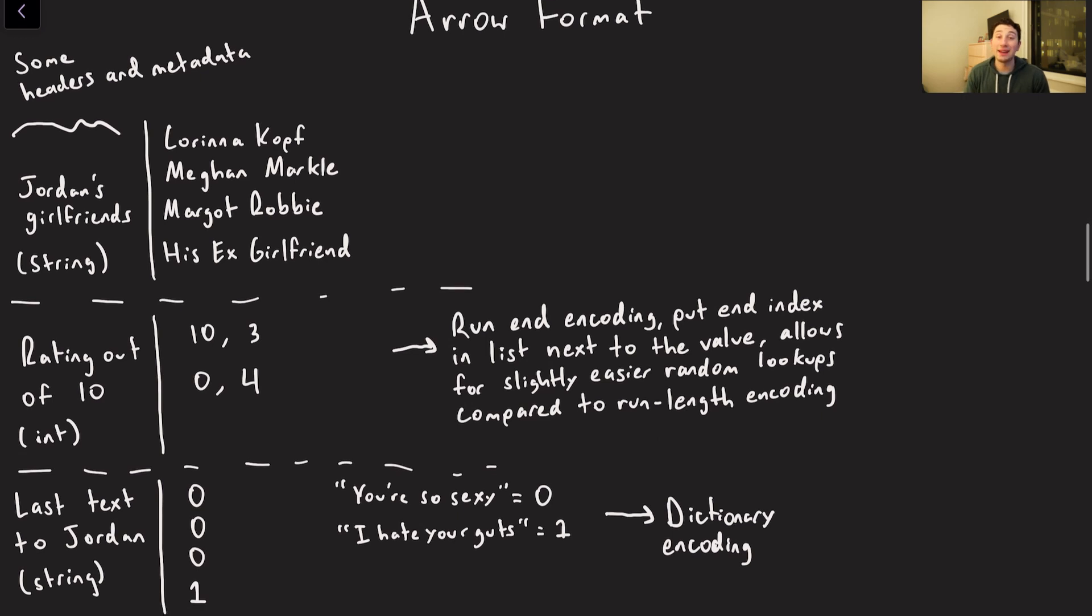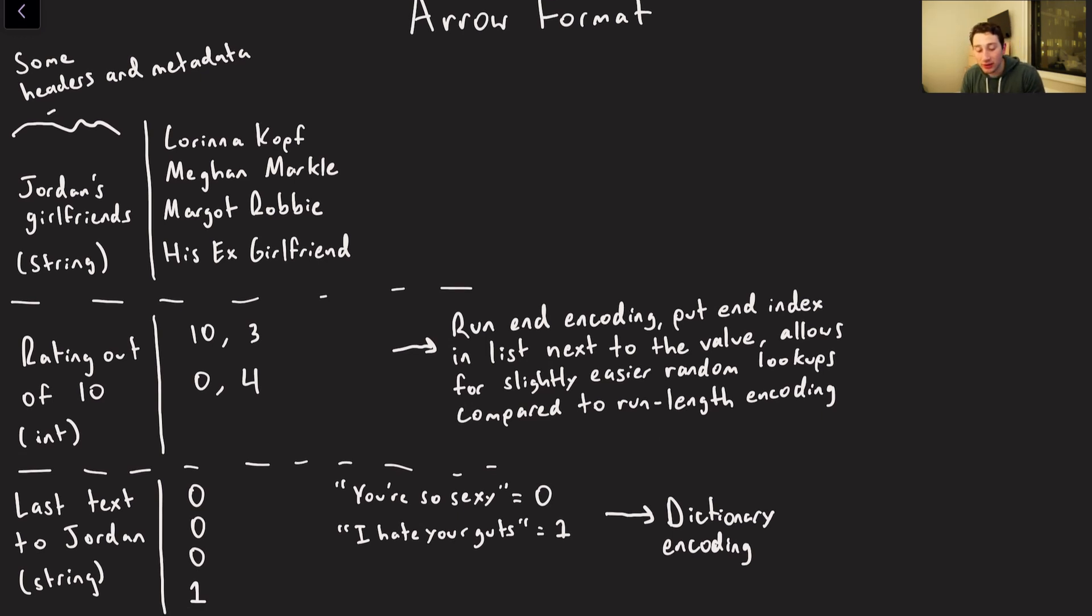Let's dive into the actual Arrow format itself. Like Parquet, there are headers and metadata for each column - maybe each column has a data type associated with it. We've got one column, Jordan's Girlfriends, which is just a typical string column of high ordinance. Number two is their rating out of 10. You might notice this column doesn't have four different values, it only has two - a 10 and a zero. This is because this column is run-end encoded. Basically at index three, we stop having tens, and at index four, we stop having a zero. So it's representing 10, 10, 10, zero. The nice thing about run-end encoding compared to run-length encoding is if I wanted to figure out who lives at index two, I can do a binary search by finding three is bigger than two, and we can binary search between those values.